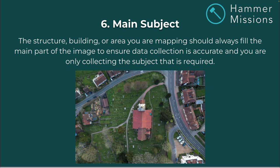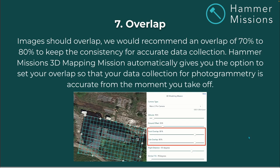Overlap: images should overlap — we'd recommend 70 to 80 percent — to keep consistency for accurate data collection. As previously discussed, overlap is very important. Hammer Missions' 3D mapping mission automatically gives you the option to set your overlaps, so your data collection for photogrammetry is accurate from the moment you take off, as previously demoed.